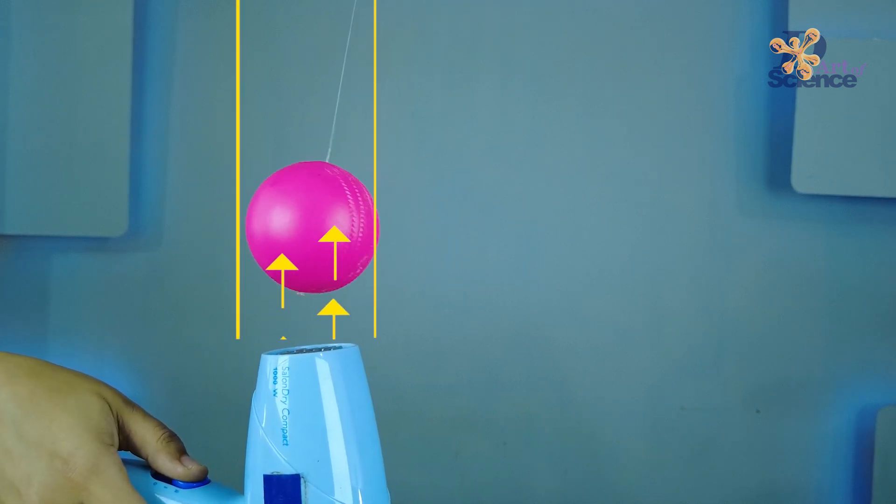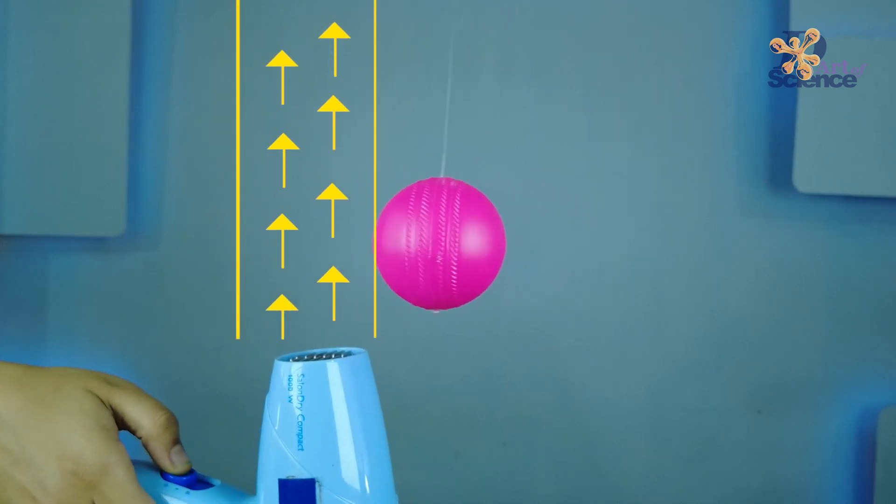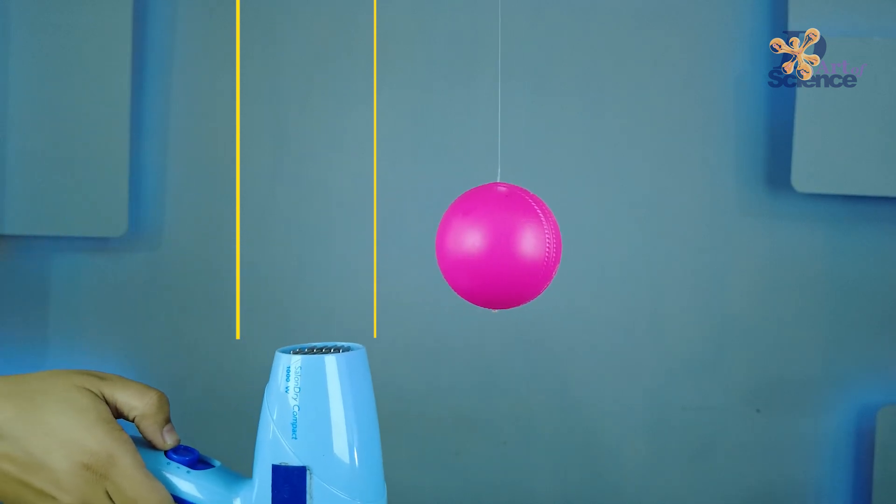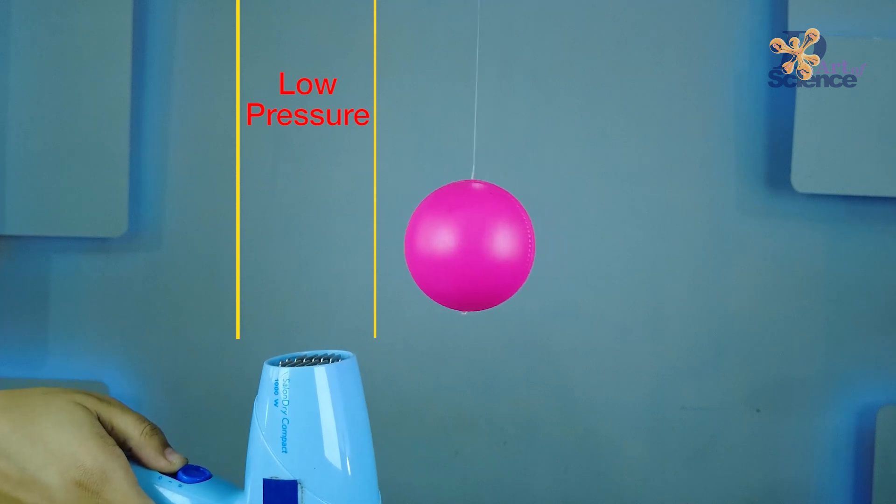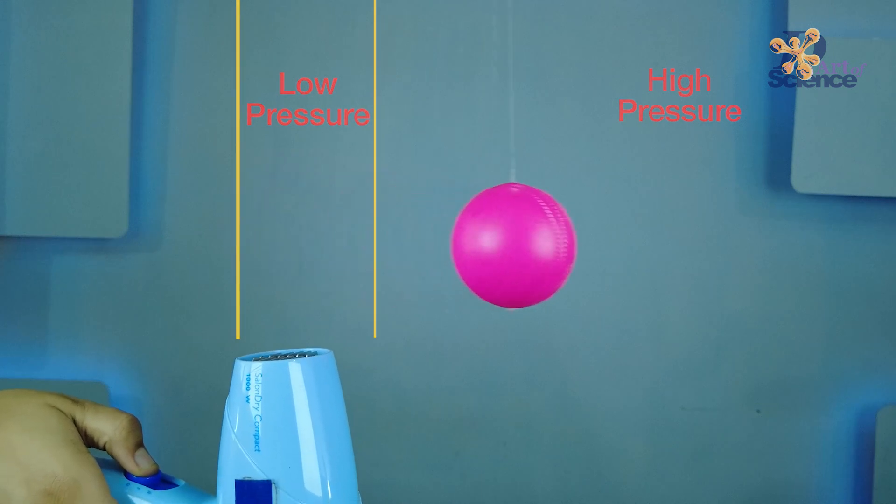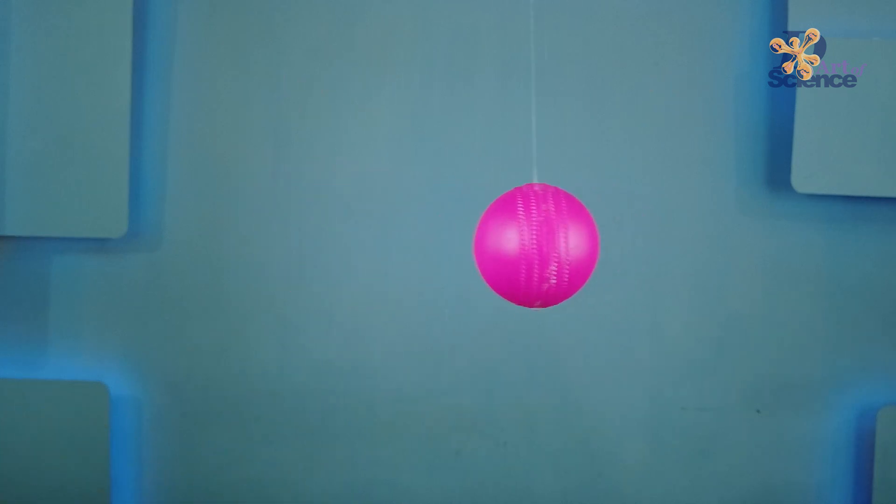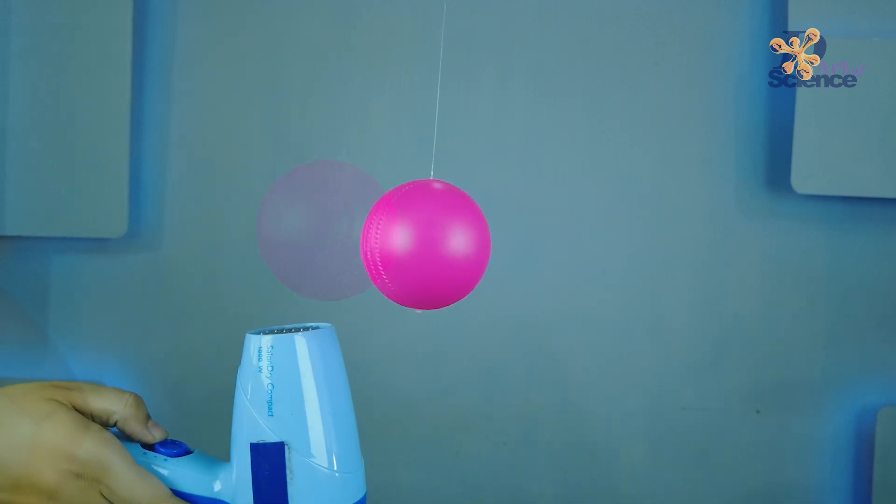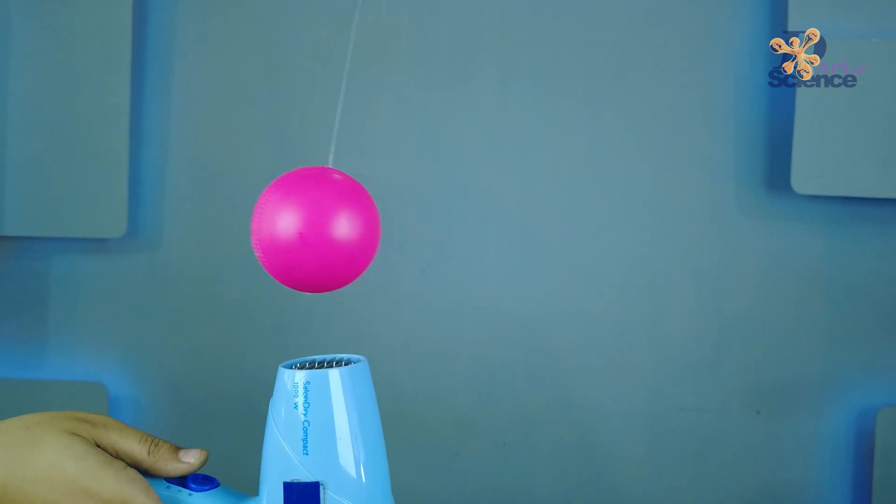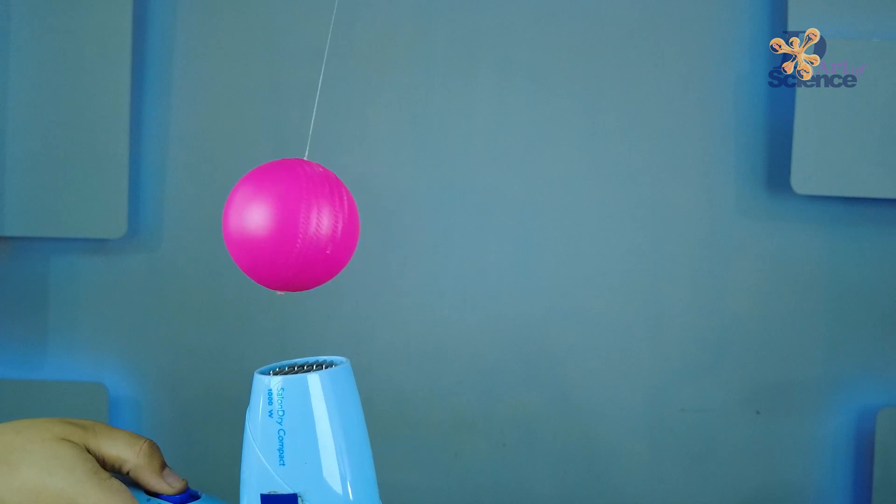What we have done is create a stream of moving air beside the ball. So now, this column has low pressure and the area near the ball has relatively higher pressure. And so, the ball will get pushed into the low pressure column of moving air because air always travels from high pressure areas to low pressure areas.